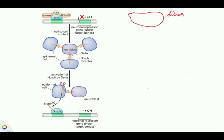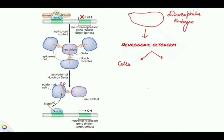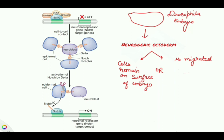Here is the Drosophila embryo. As we know, development of the nerve cord in insects is ventral. This ventral nerve cord arises from a sheet of cells called the neurogenic ectoderm. This tissue gives rise to two cell populations: cells that will remain on the surface to form the epidermis, and cells that will migrate inside the embryo to form neurons.